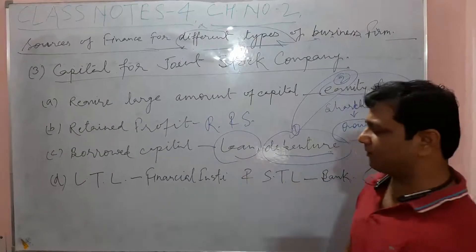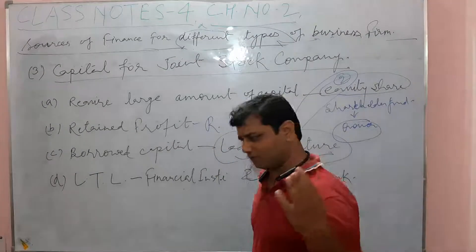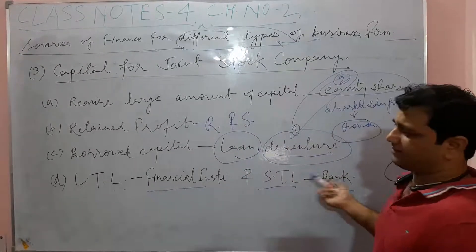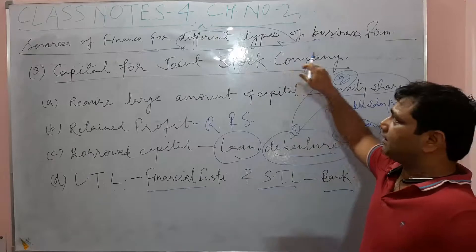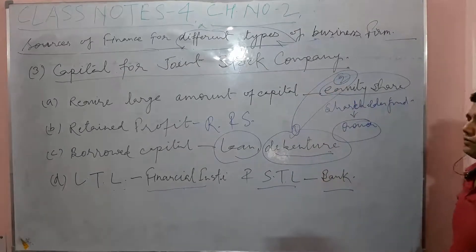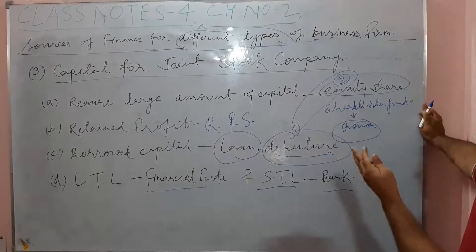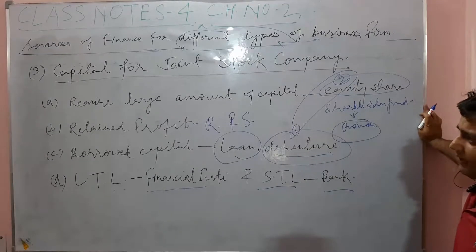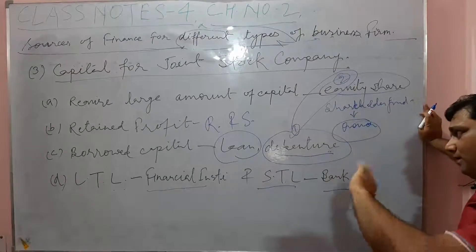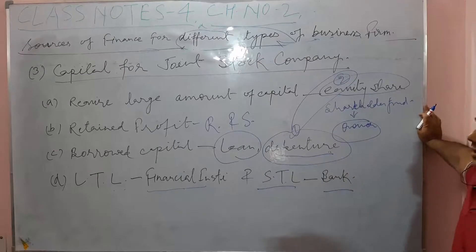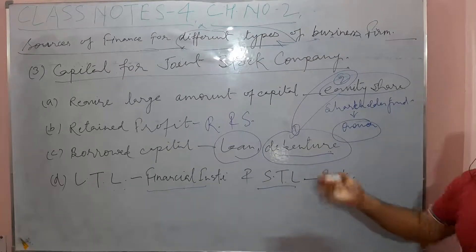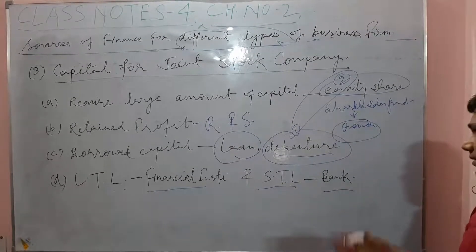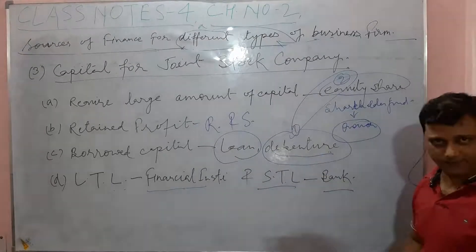The fourth source is long-term funds raised from financial institutions. To summarize, the company has four sources of raising capital funds: first, owned funds like equity shares; second, retained earnings; third, borrowed capital in the form of loans and debentures; fourth, long-term funds from financial institutions. Short-term funds can also be raised from banks. Thank you.